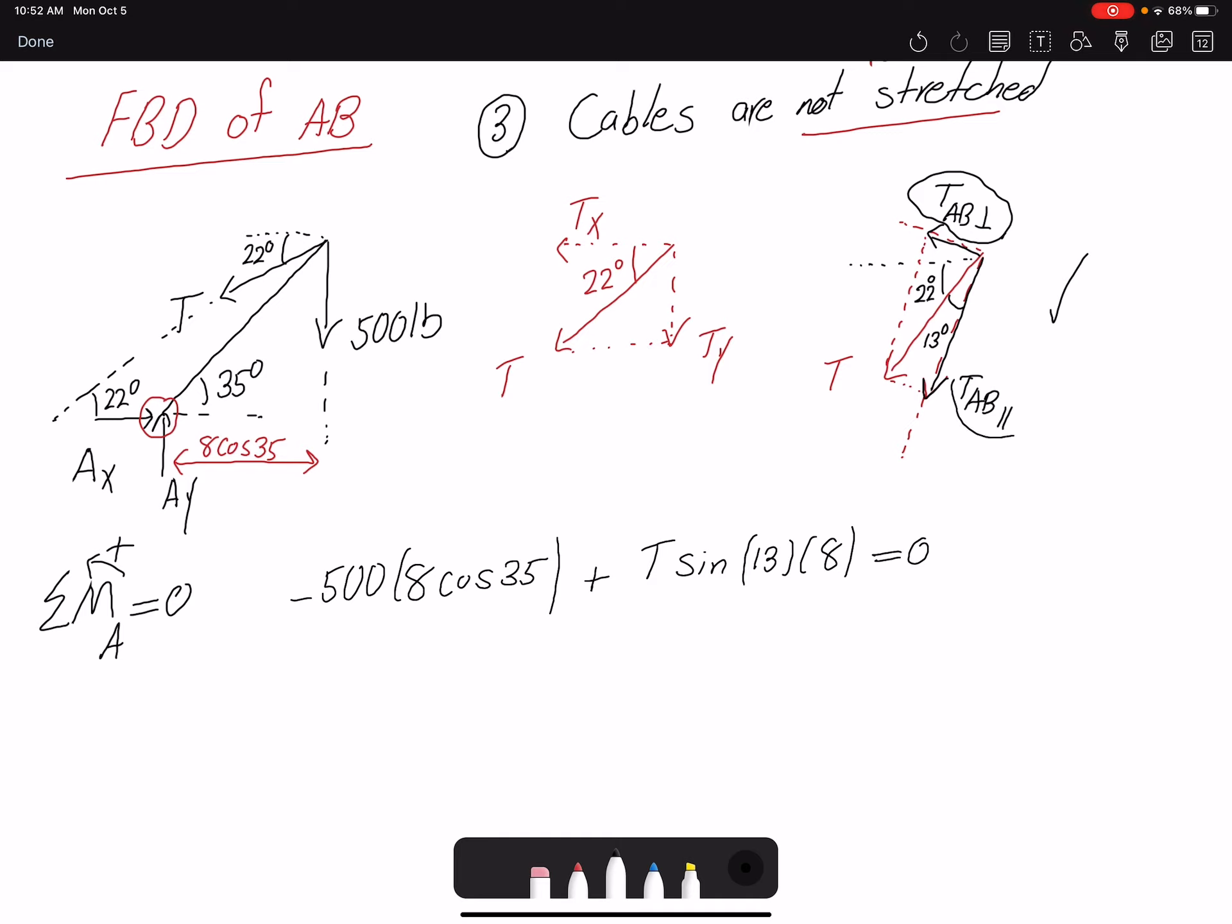And this component is not going to create any moment about point A because it's towards A. A would be somewhere here, and only the vertical component would create a moment, and then this vertical component is T sine 13 degrees. So I have one equation and one unknown. Then tension would be simply 1.82 kip or kilopound, or 1820 pounds.